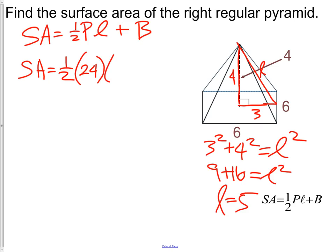The slant height we just figured out was 5 plus the area of the base. Since the base is a square, we can take one side and square it. 6 times 6. Length times width, base times height. It all works the same.